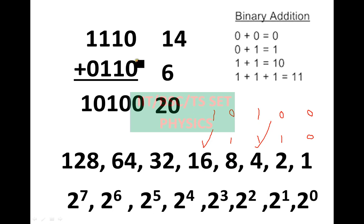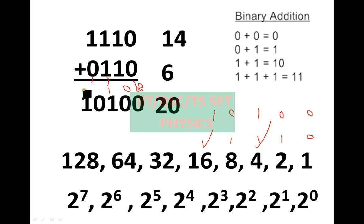0 plus 0 is automatically 0, no problem. 1 plus 1 is automatically 0, and automatic 0 is next. Here carry 1 is equal to 1, 0. So value is equal — binary addition is equal to decimal value.